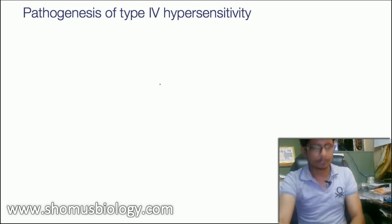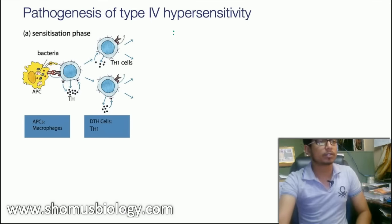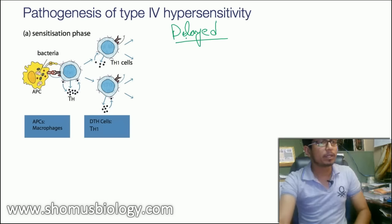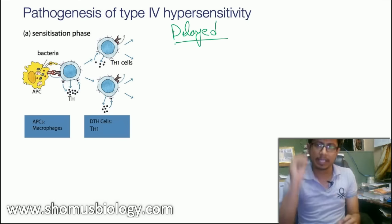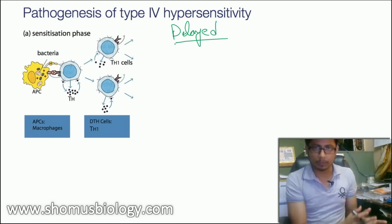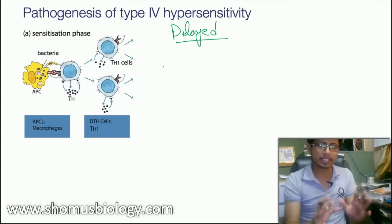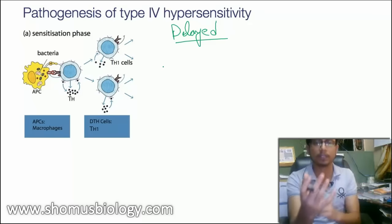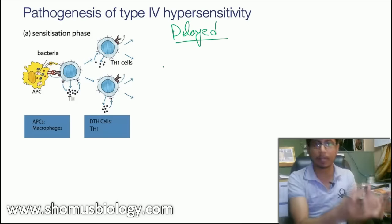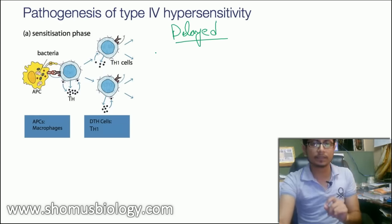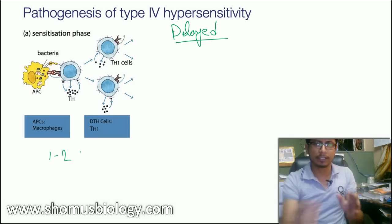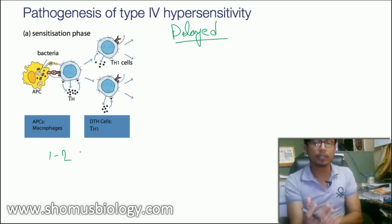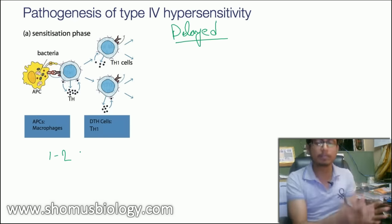The last type is Type 4 hypersensitivity, also known as delayed hypersensitivity. It is called delayed because this reaction does not take place rapidly like the other types. Types 1, 2, and 3 occur very fast after allergen or serum introduction. Type 4 requires an incubation time — almost one to two weeks with no symptoms — before reactions begin.